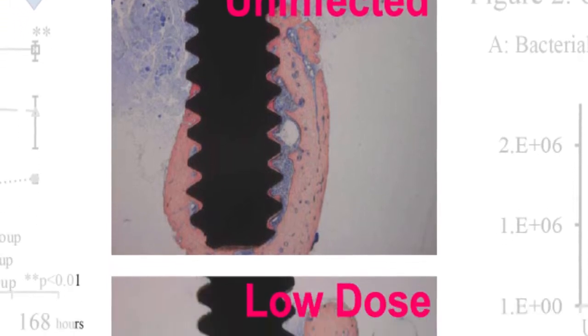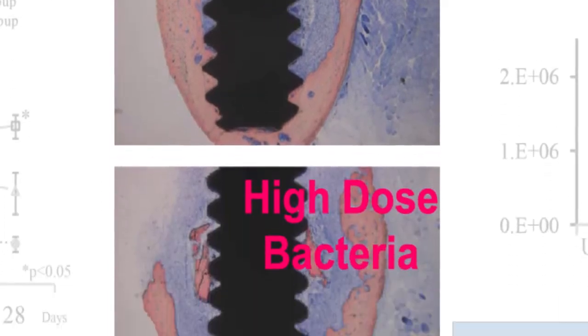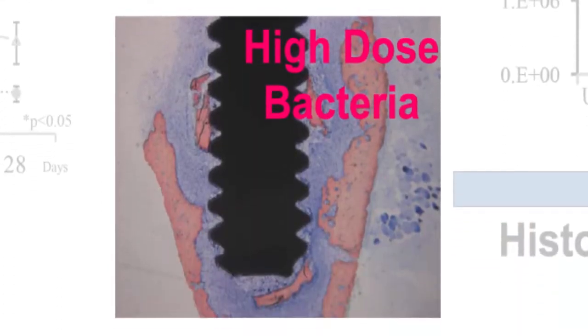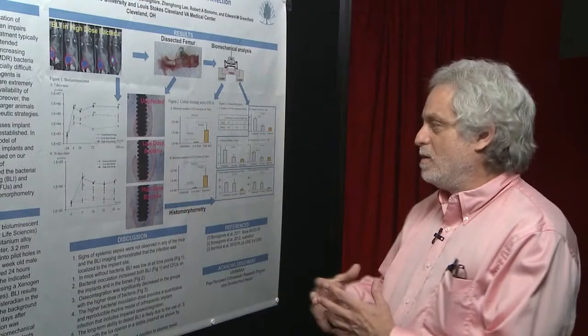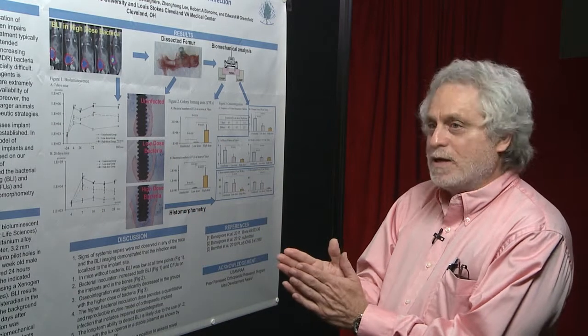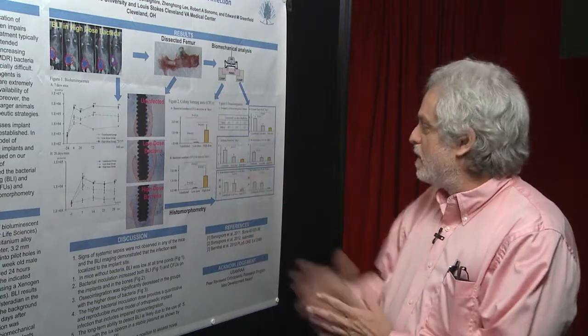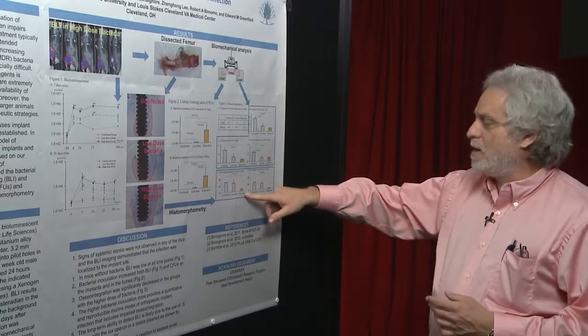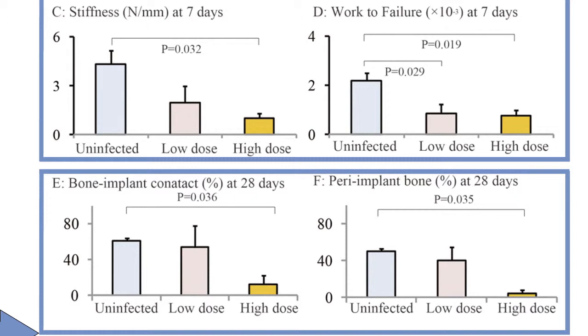In contrast where there's low dose or high doses of bacteria, you can see there's very little contact between the implant and the bone which is shown in the pink. We can measure the amount of new bone both right up against the implant and the bone in the area. And again that's inhibited by the presence of high levels of bacteria.